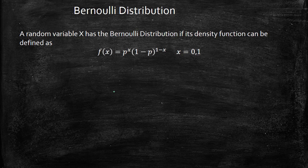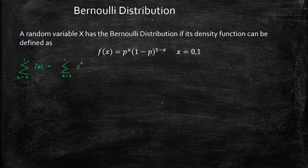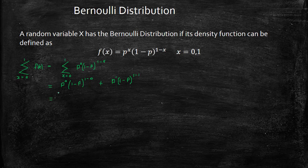For a Bernoulli distribution, f(x) equals p raised to the power x times (1 minus p) raised to (1 minus x), for x equals 0 and 1. We sum from x equals 0 to 1 of f(x), which should equal 1. Plugging in x equals 0 and x equals 1, we get (1 minus p) plus p, which equals 1.